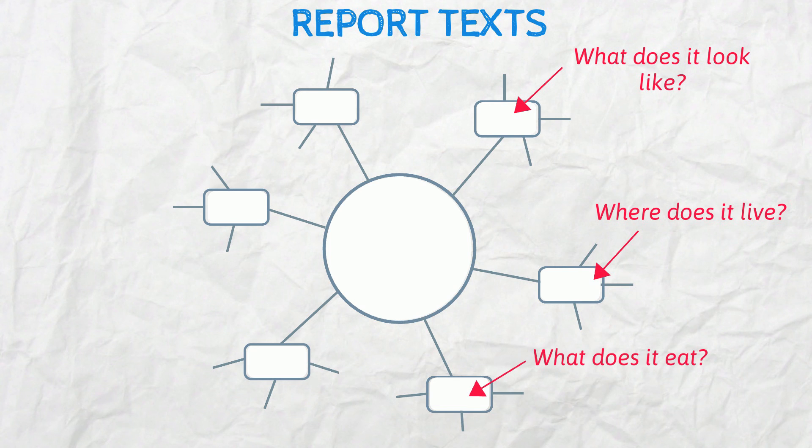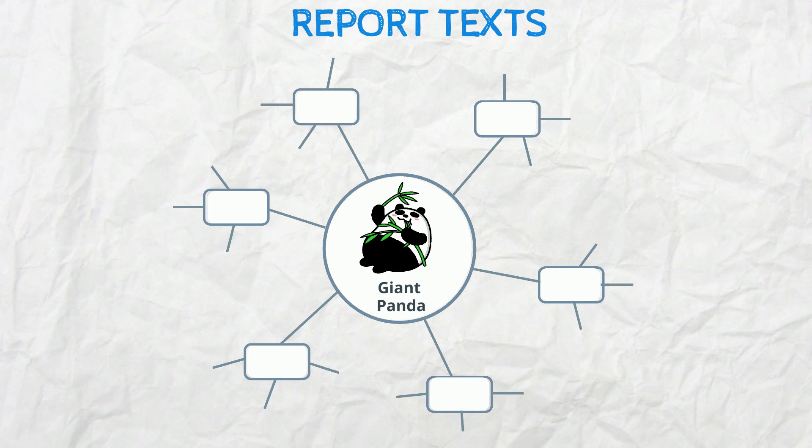For example, if I was reporting on the giant panda, I might want to report on its appearance, habitat, diet, behaviour, threats and protection. The small outer arms is where you would write the information you found out whilst researching.